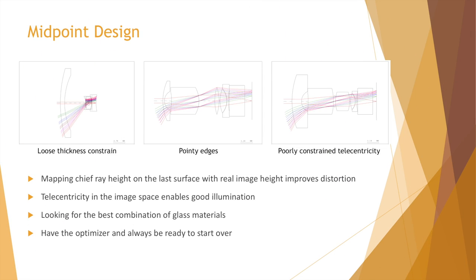Here are several midpoint designs from during the design process. The first one fills the thickness constraint. The second one has relatively better optical performance but has very sharp pointing edges, which is not good for mechanical mounting. The third one shows that the telecentricity is poorly constrained. Telecentricity in the image space is very helpful for achieving good illumination uniformity.